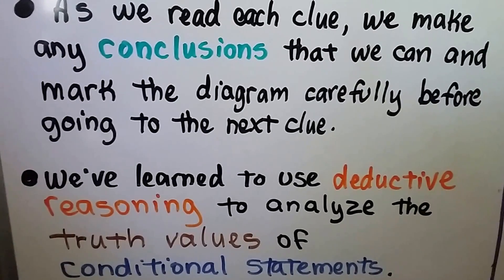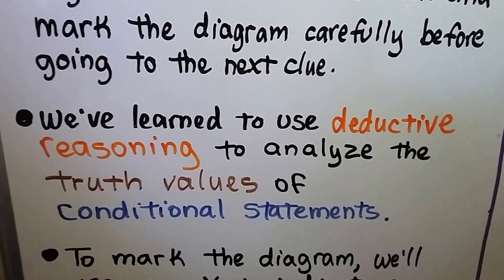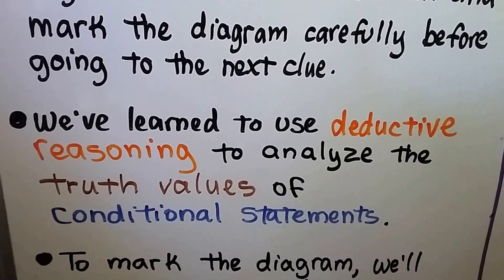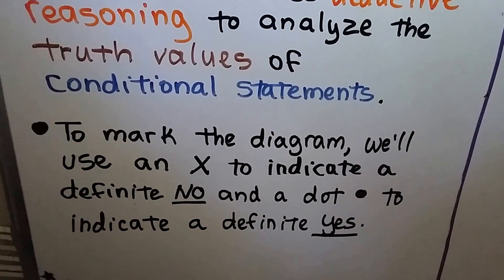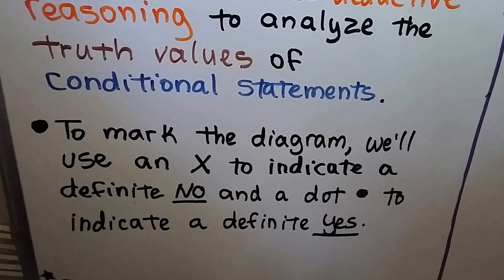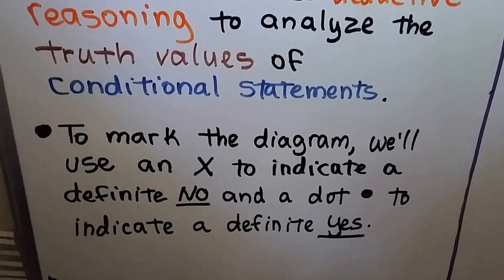Sometimes you have to go over the clues a few times. We've learned to use deductive reasoning to analyze the truth values of conditional statements. We're going to mark the diagram by using an X to indicate a definite no and a dot to indicate a definite yes in this logic puzzle.